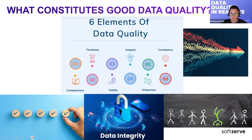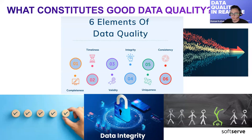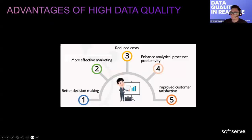The sixth and last element is consistency. Data consistency means that the data is correct, valid, and synchronized across multiple sources and systems. In other words, data consistency ensures that information is uniform and up to date, avoiding conflicts that can be created by mistakes.